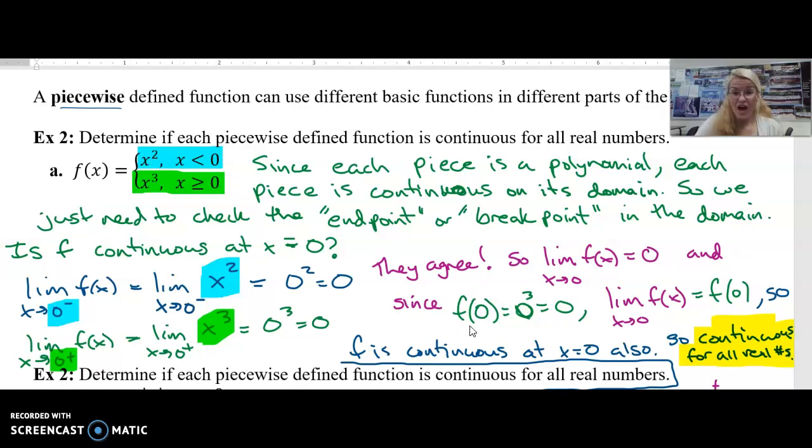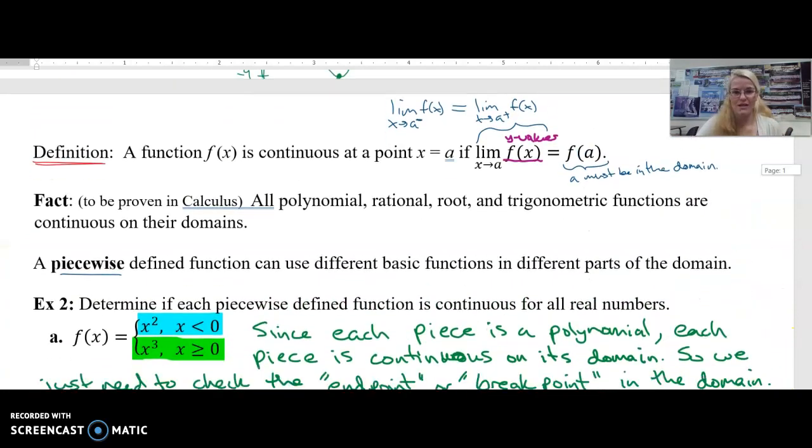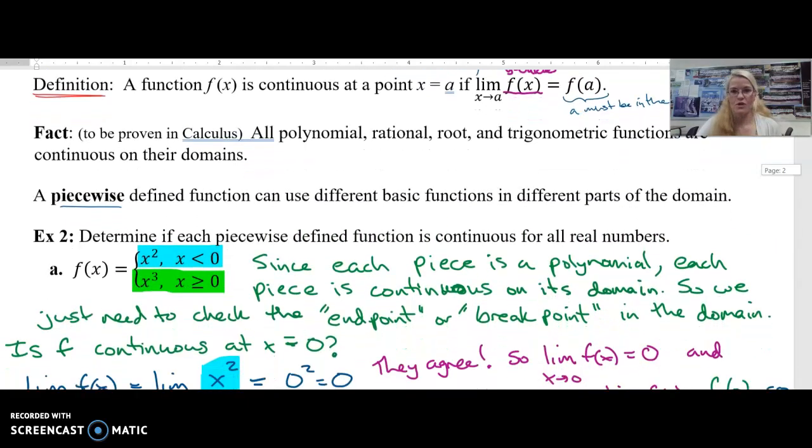And since f of zero, if I plug zero into this function, which piece do I use? I use the piece where it says or equal to. That's x cubed. So zero cubed is zero. So according to the definition of continuousness at a point, the limit as x approaches zero of f of x is equal to f of zero. So f is continuous at x equals zero also. So since it's continuous for all x less than zero, and it's continuous for all x greater than zero, since these two functions are themselves continuous on their domains, and since it's continuous at zero, it's continuous for all real numbers. Now that is using the definition of continuity to show that this piecewise function is continuous for all real numbers. Would you like to see the quicker, less painful way of showing that it is continuous for all real numbers?